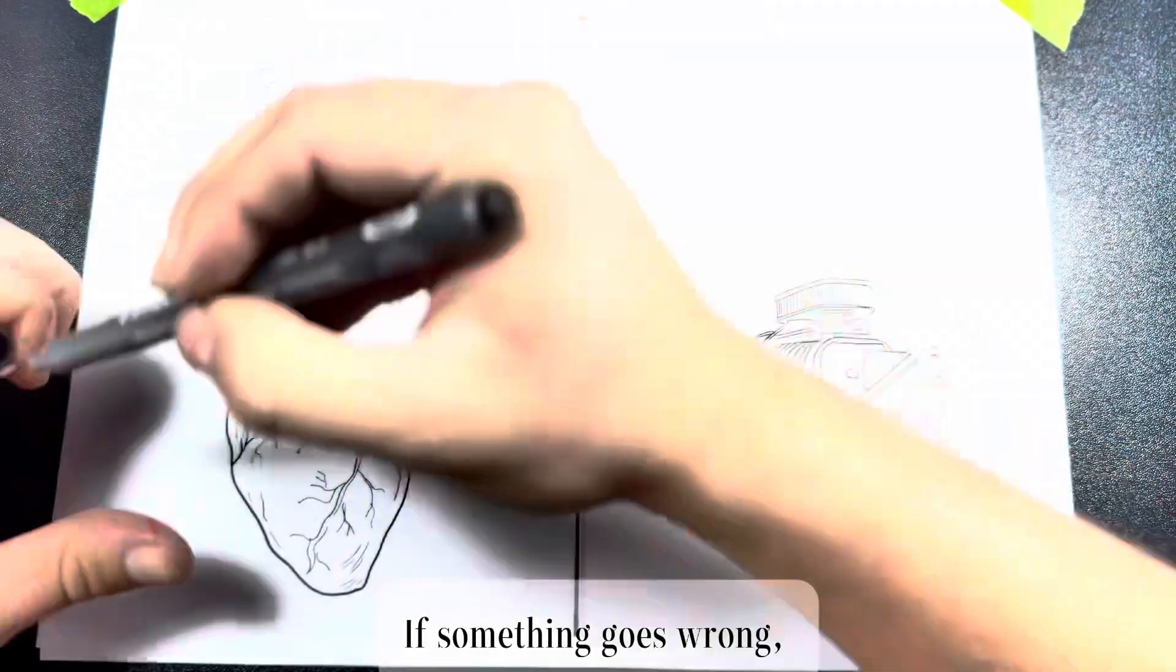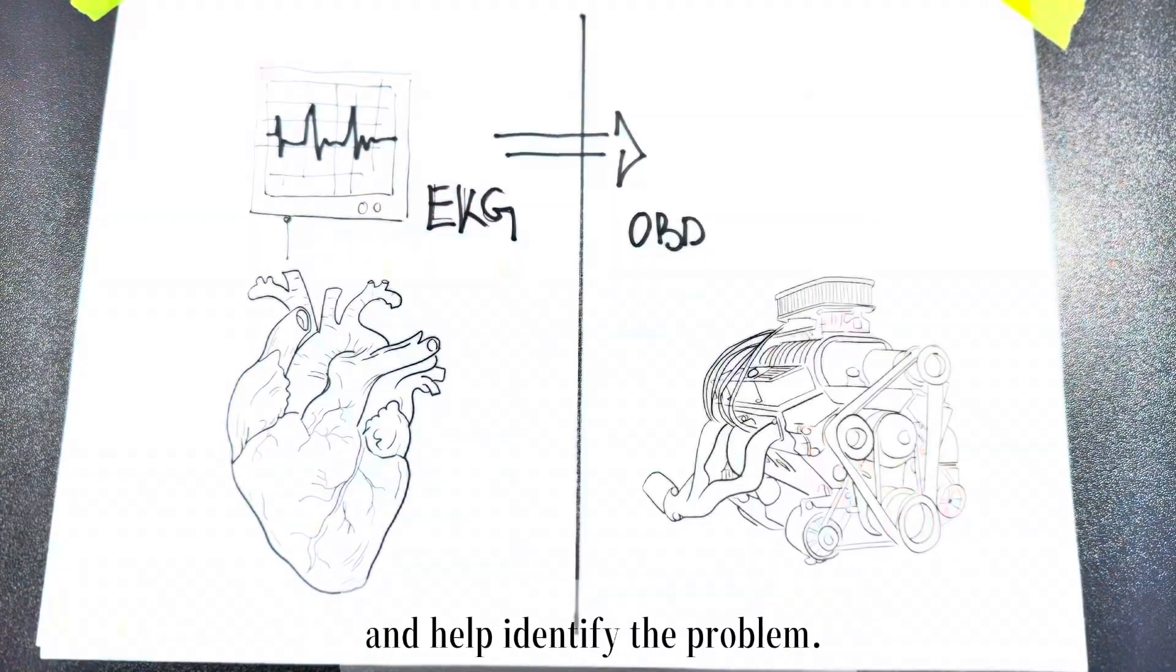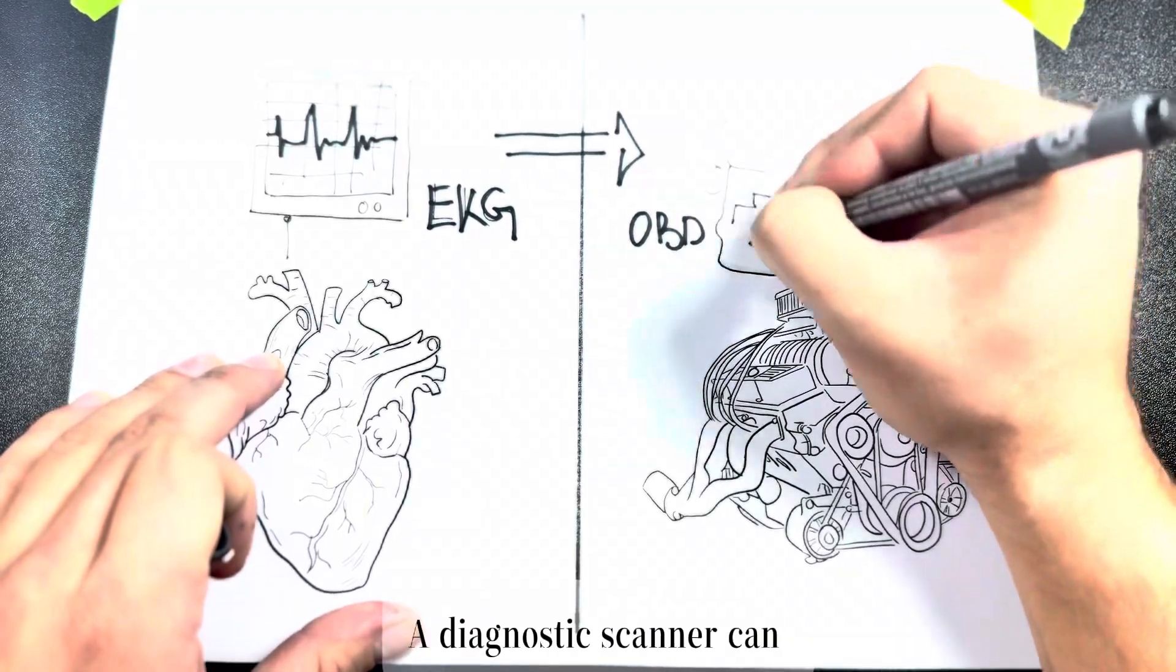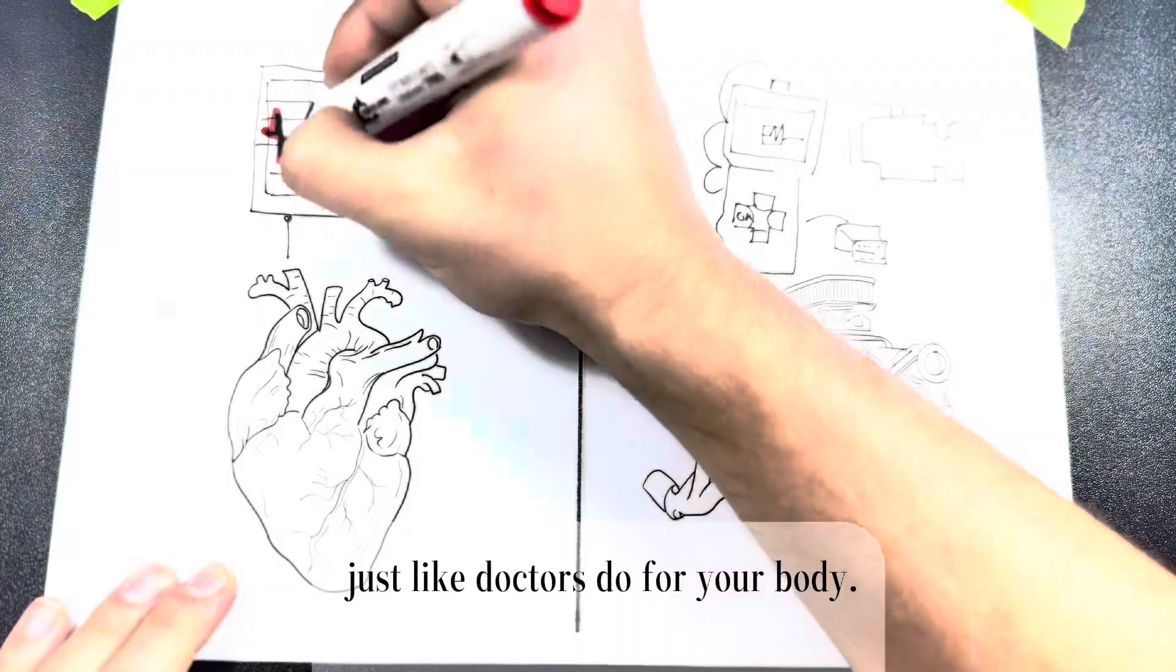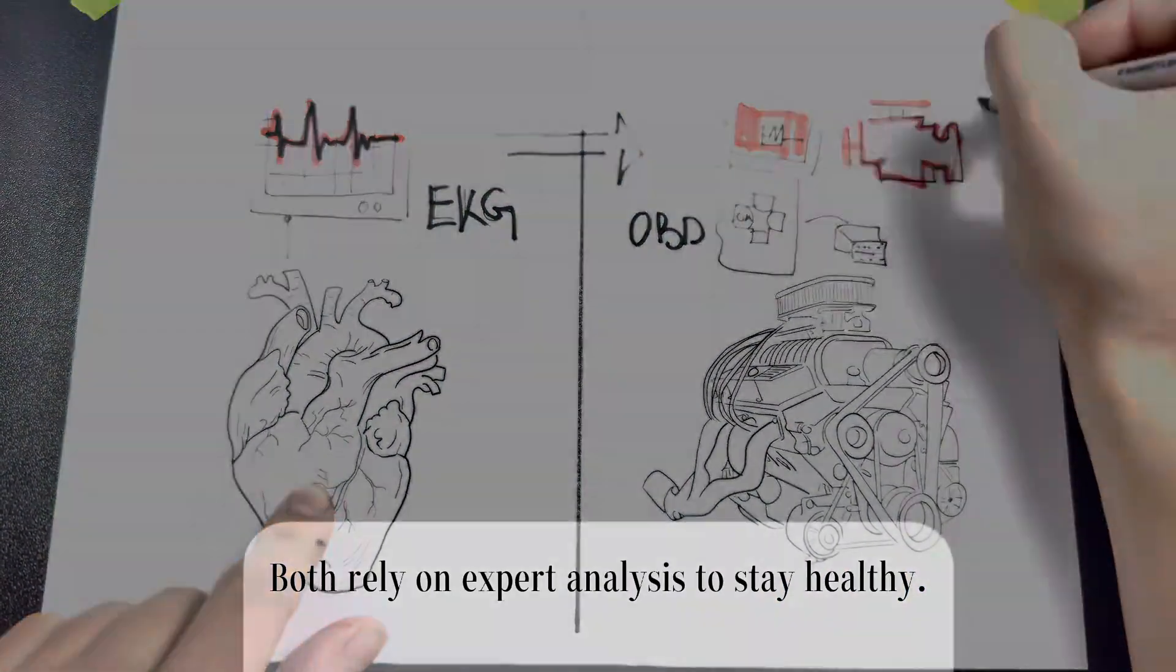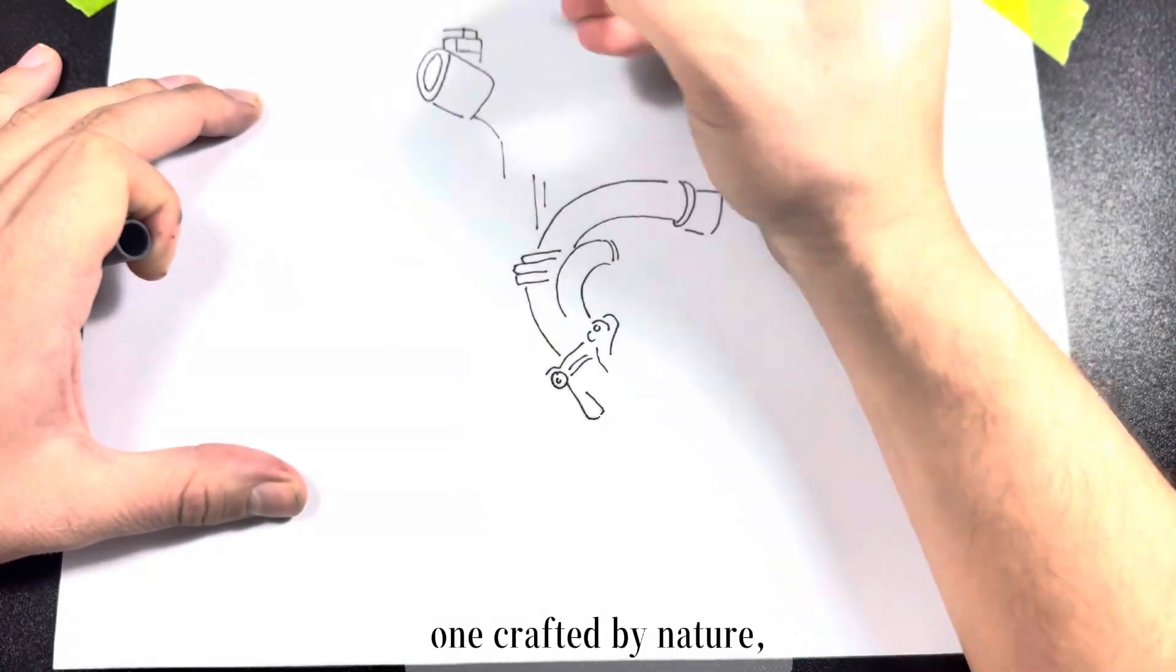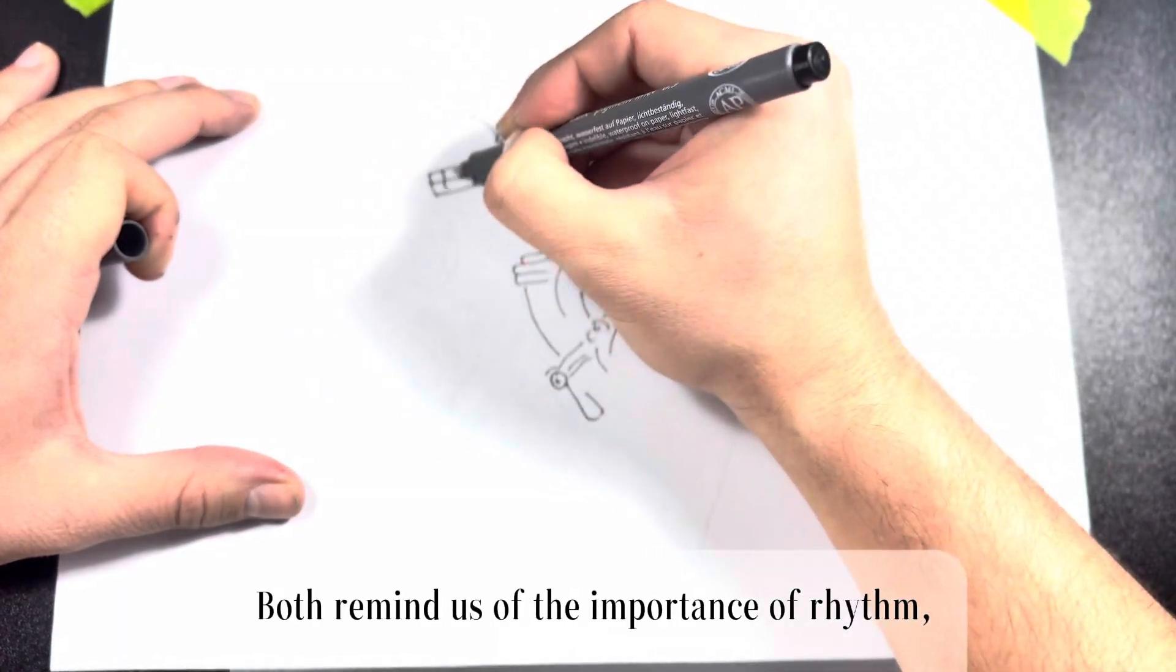Problems and diagnostics: For the heart, if something goes wrong, an EKG can detect irregularities and help identify the problem. For the engine, a diagnostic scanner can pinpoint issues, just like doctors do for your body. Both rely on expert analysis to stay healthy.